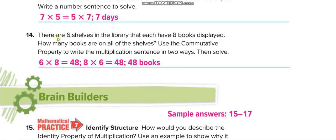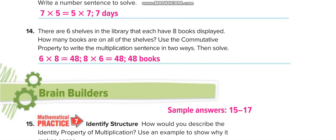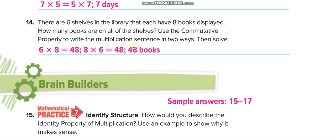There are 6 shelves in the library, each with 8 books, so the total is 6 times 8 equals 48 books. Using the commutative property, we can also write 8 times 6 equals 48.